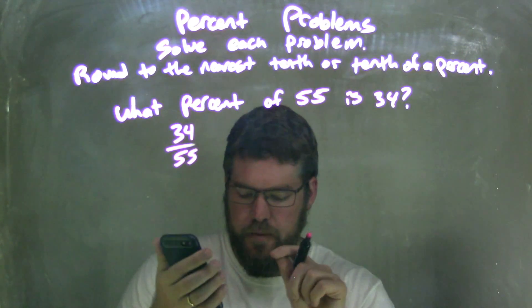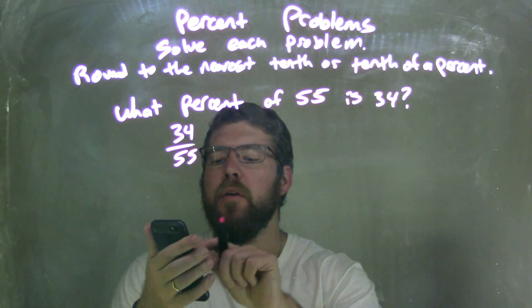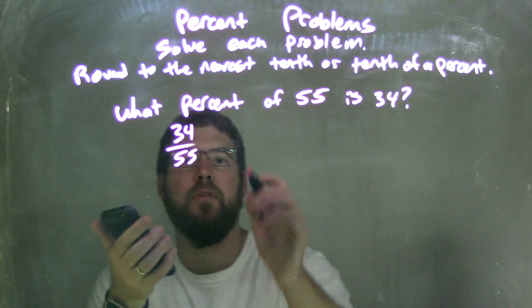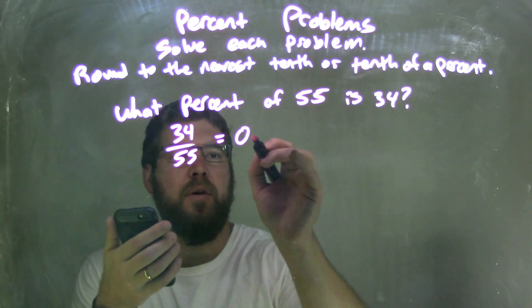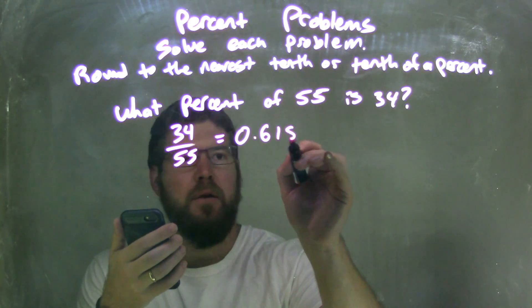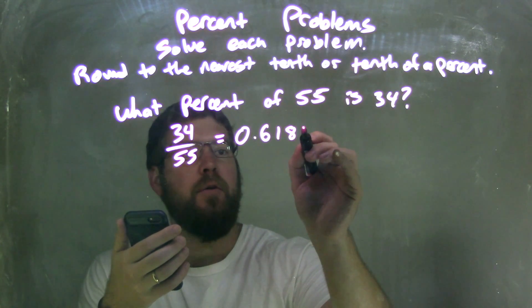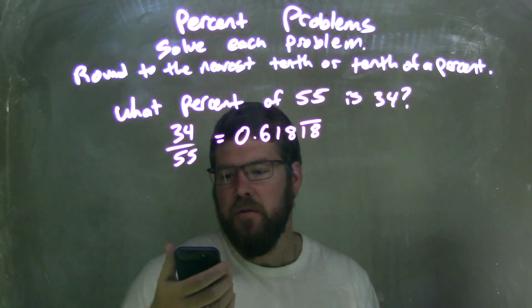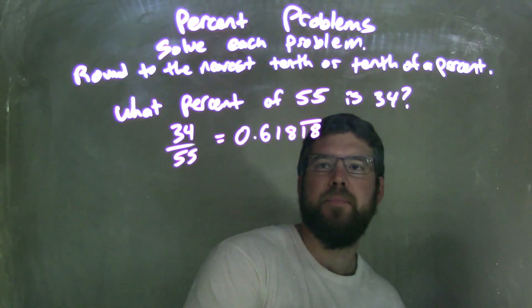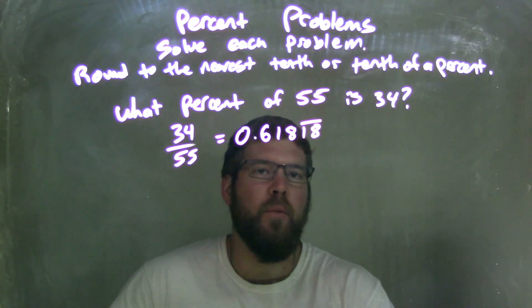So we look at a calculator here. 34 divided by 55 comes out to be approximately, equal 0.618, then it goes 1, 8 repeating the 1, 8 part. So 0.61818, 1818.